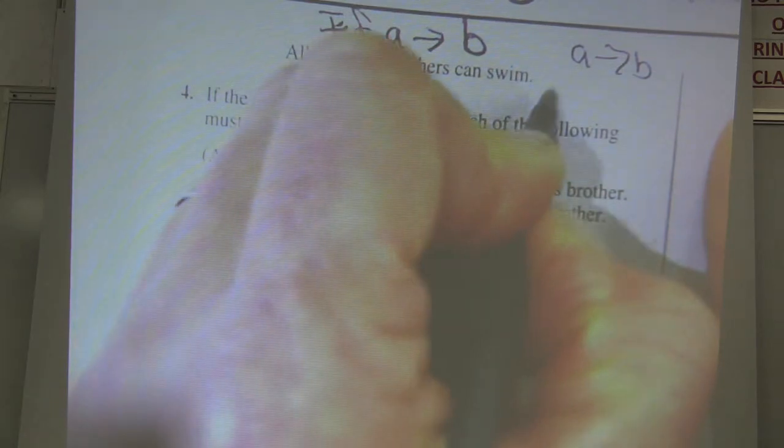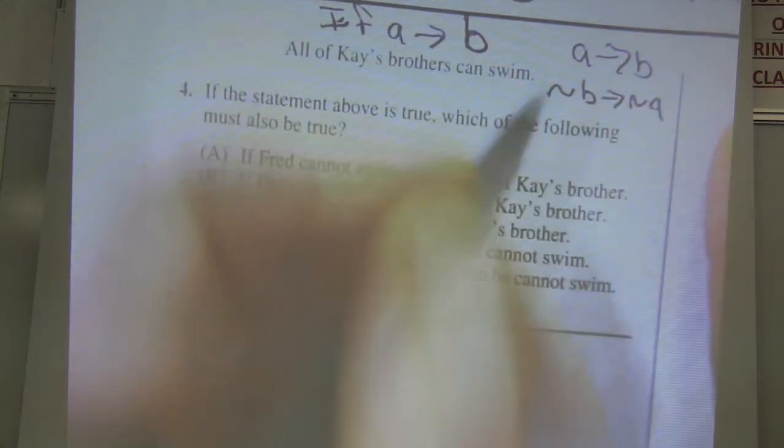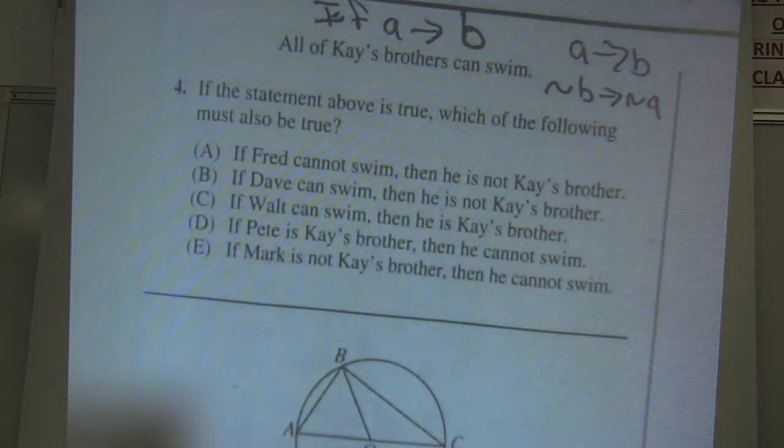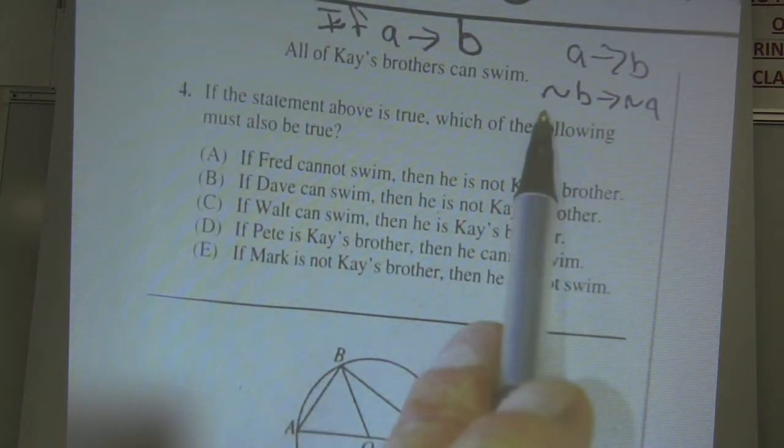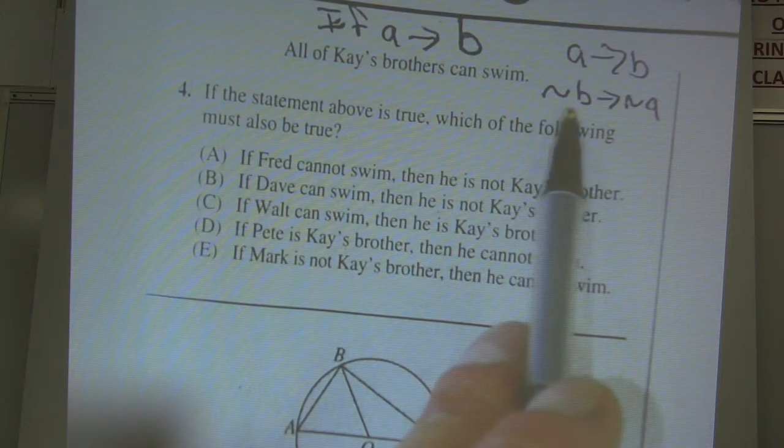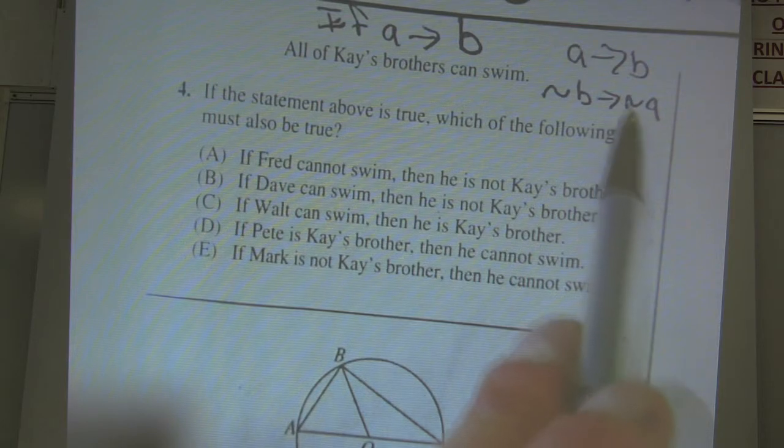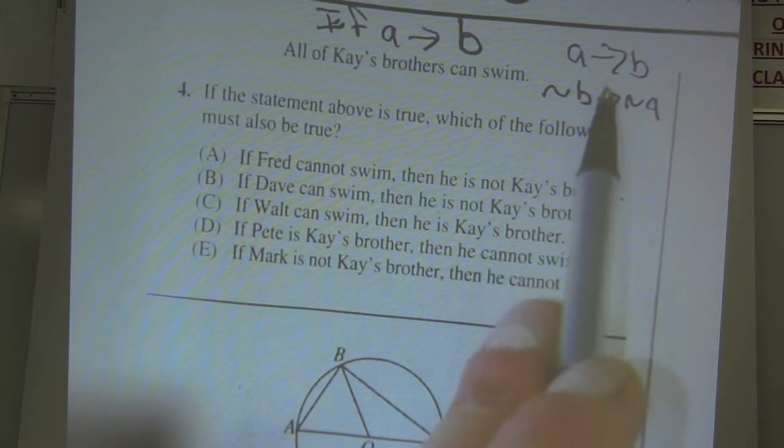You can also, this is logical, if not B, then not A. So for example, if Jimmy can't swim, then Jimmy's not K's brother. So it has to be one of these, has to start off with one of these to be good.